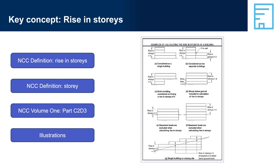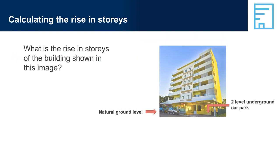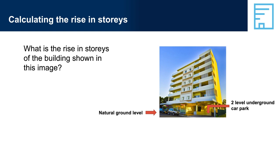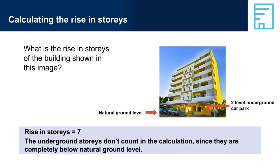The rise in stories of a building is used to determine the type of construction, along with the building's classification. Calculating the rise in stories: What is the rise in stories of the building shown in this image? The rise in stories equals seven. Underground stories don't count in the calculation since they are completely below natural ground level.